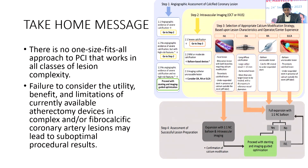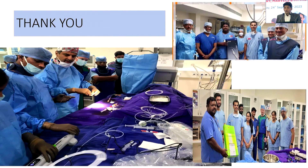The take-home message is that there is no one-size-fits-all approach to PCI — it works across all classes of lesion complexity. Failure to consider the utility, benefits, and limitations of currently available atherectomy devices in complex or fibrocalcific lesions may lead to suboptimal procedural results. The four important steps when treating calcified lesions are: Step 1, angiographic assessment; Step 2, imaging; Step 3, selection of proper calcium modification devices; and Step 4, NC balloon dilatation followed by proper imaging and stent optimization. Thank you, and I thank Apollo for providing these techniques to all patients.